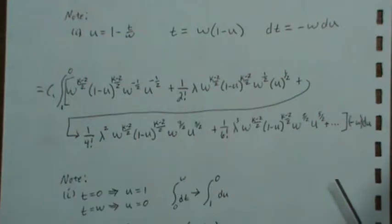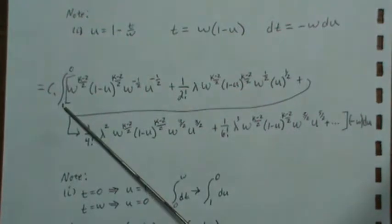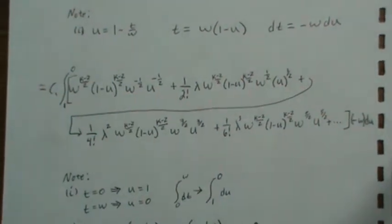And then I want to check the limits of integration and in the T world I went from zero to W but in the U world I have to go from one to zero and then I put it there. But I don't like that.